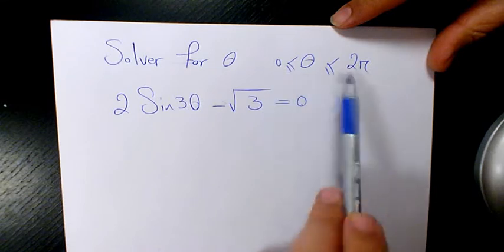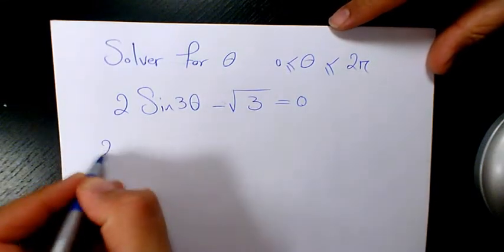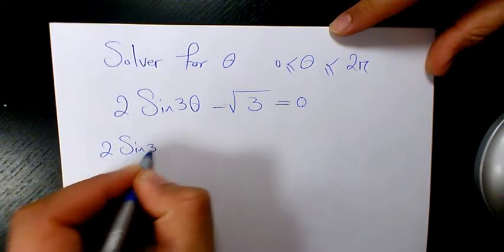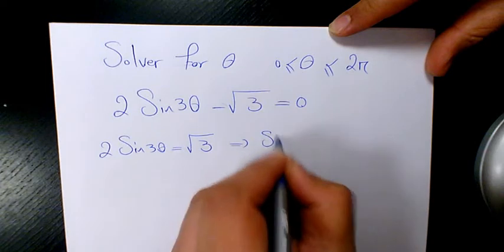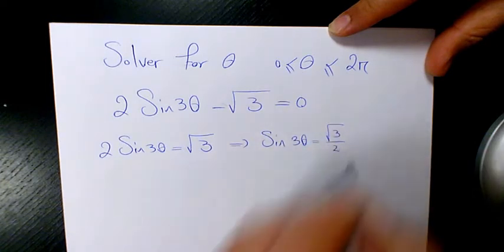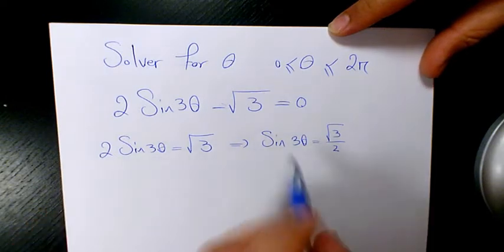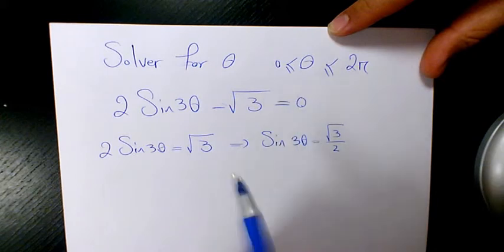And θ is between zero and 2π. So the first thing I need to do, I need to say 2 sine 3θ equals to root 3. Then we can say sine 3θ equals to root 3 over 2. And when sine 3θ equals to root 3 over 2, and we want to find out from zero to 2π.